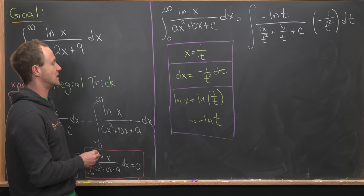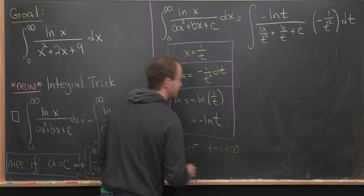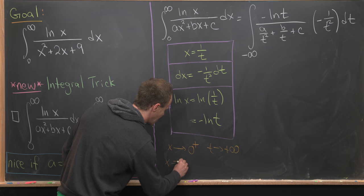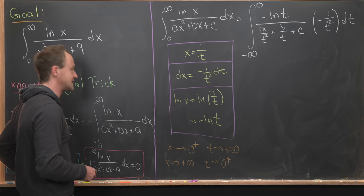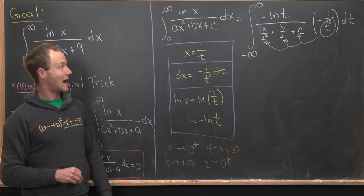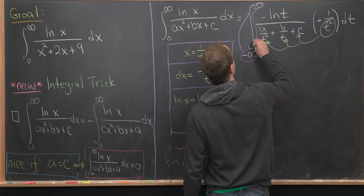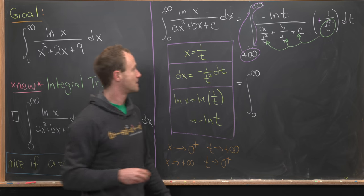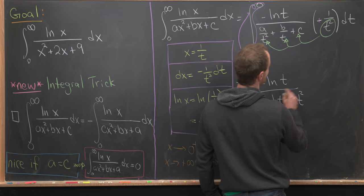Now let's handle the bounds. As x approaches zero from above, t approaches positive infinity, so the lower bound becomes infinity. As x approaches positive infinity, t approaches zero from above, so the upper bound becomes zero. We multiply t² through the denominator and use the minus sign to switch the bounds of integration, leaving the integral from zero to infinity of −ln(t) over a + bt + ct² dt.